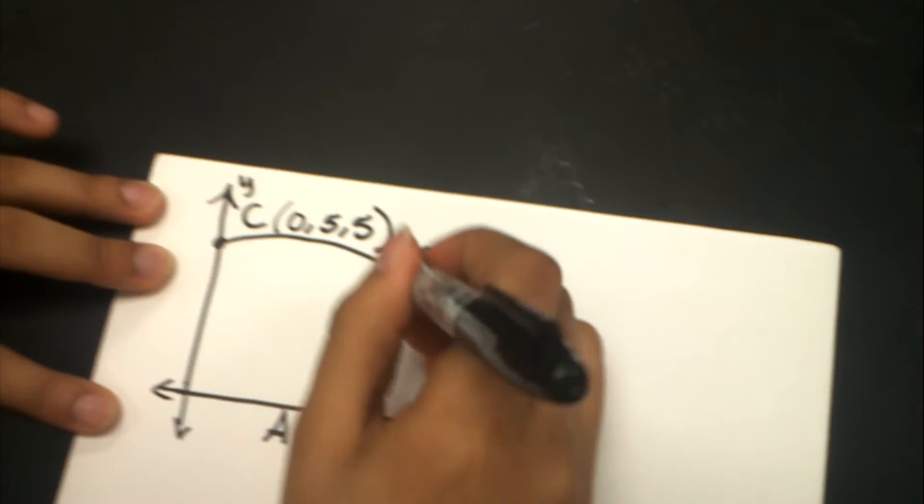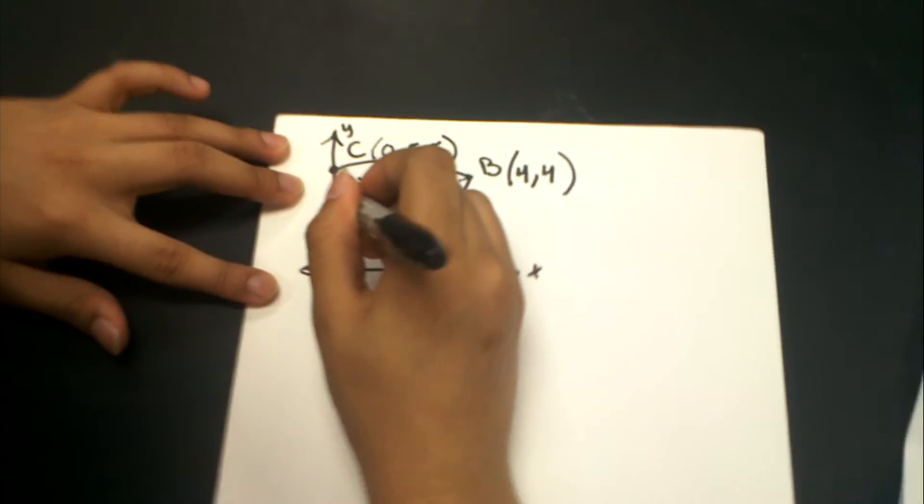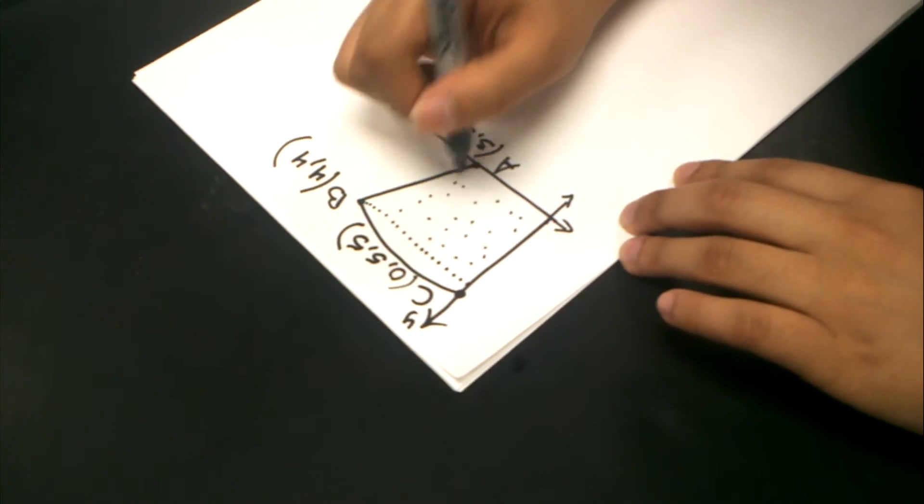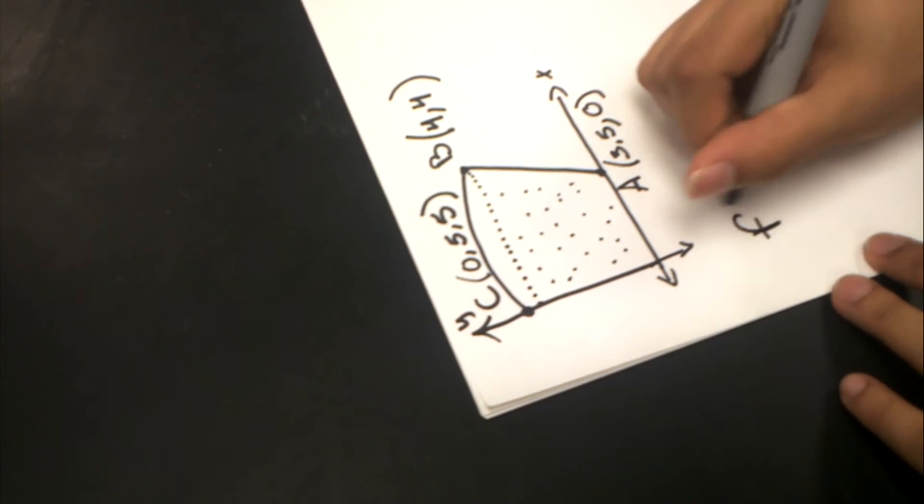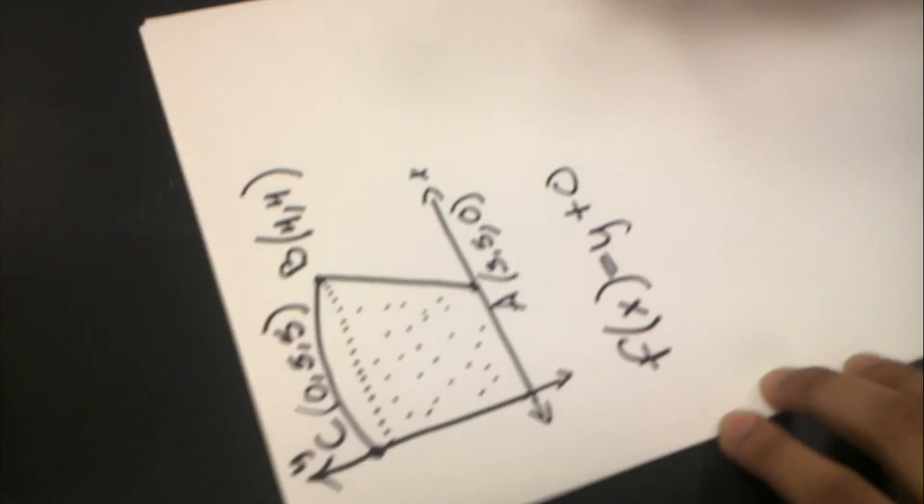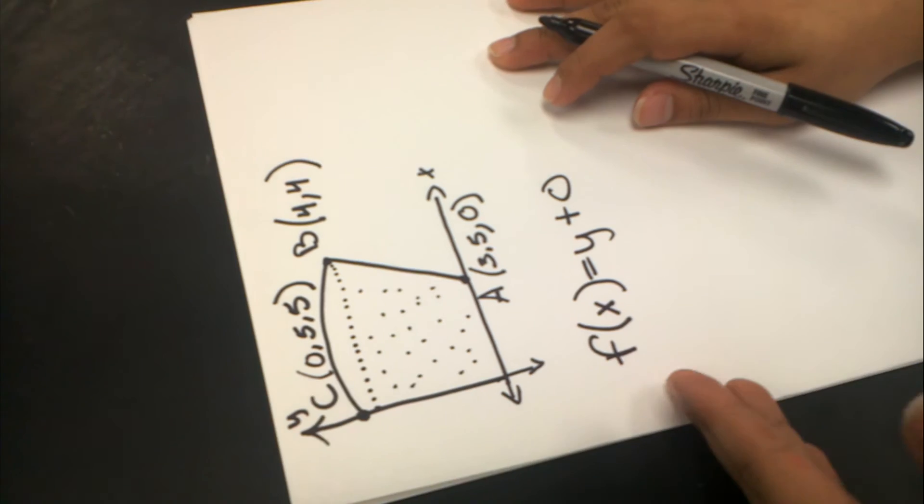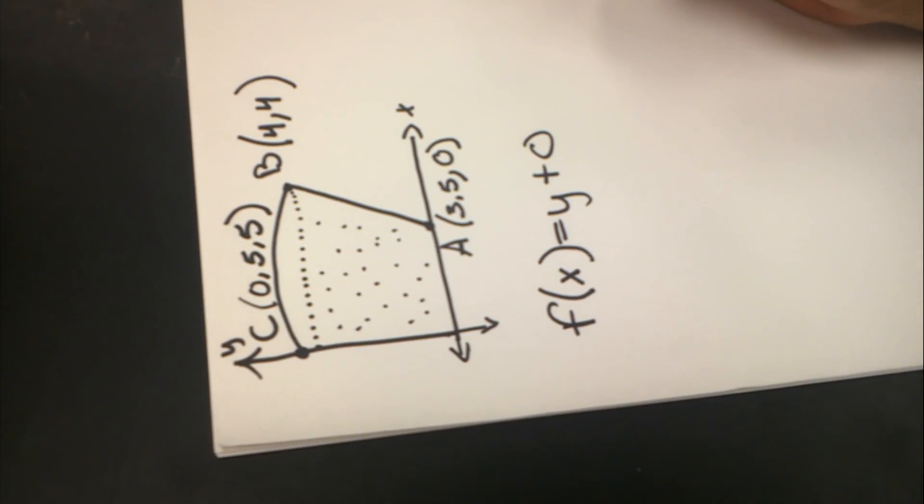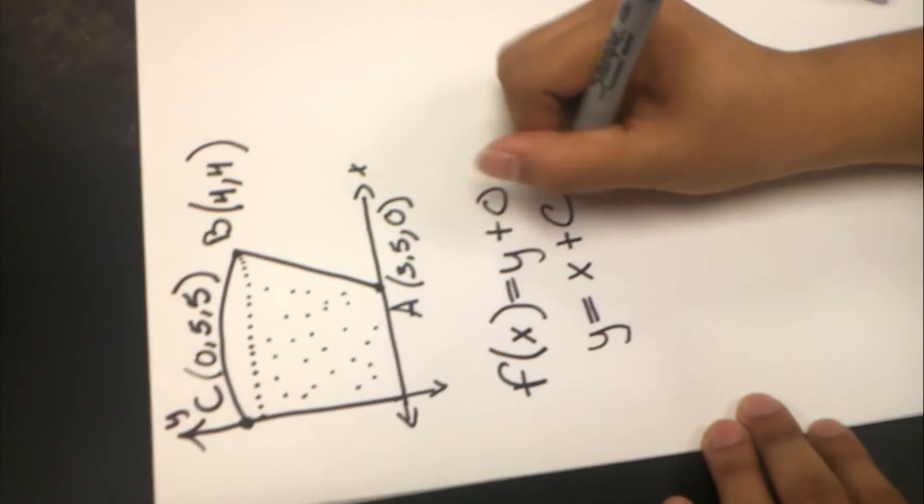And I am going to find over here the line equation of the line segment, which is this whole area, all this in here, that shaded area. Of course, we usually find the equation of a line using the formula f(x) = y + 0, but if you remember, we are spinning this across the Y axis. This equation has to be with respect to Y. So this is going to be Y = X + 0.